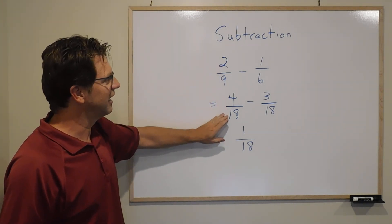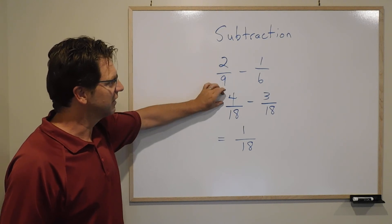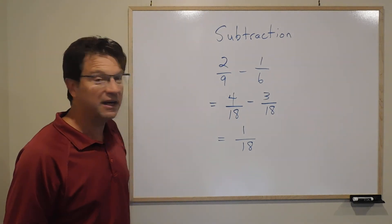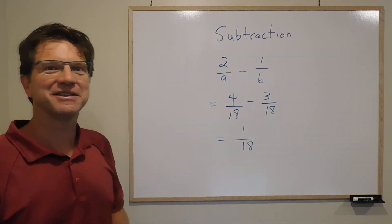Common denominator exactly the same. Make sure the numerators are equivalent, and then we just subtract the numerator instead of adding. Otherwise it's exactly the same.